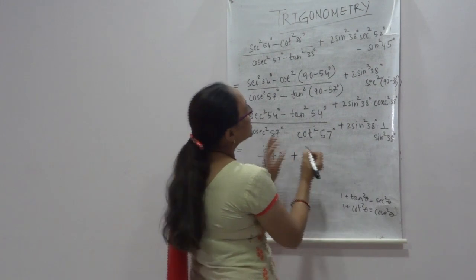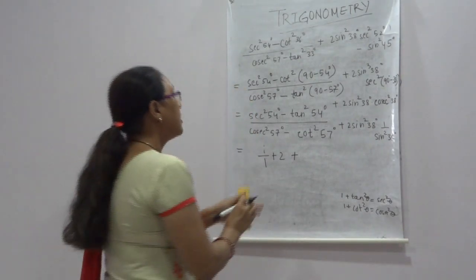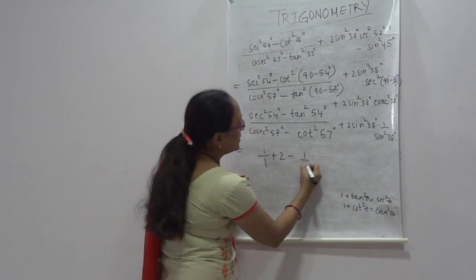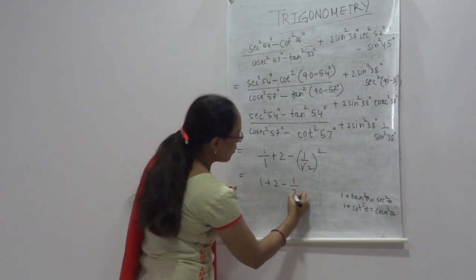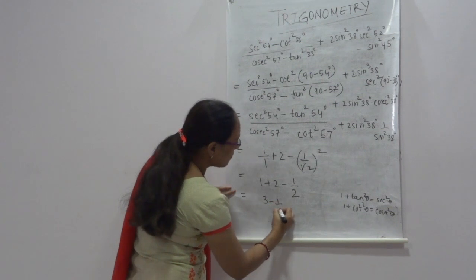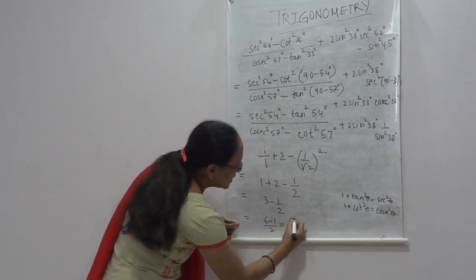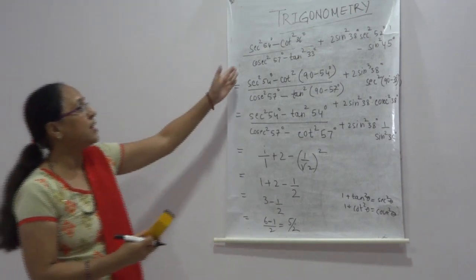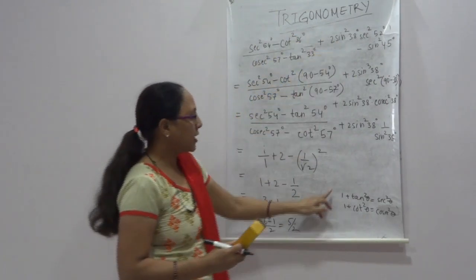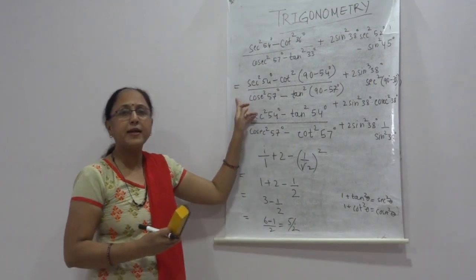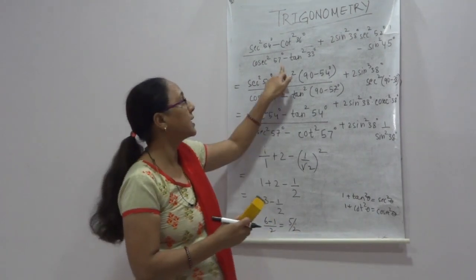Now the third term is −sin²45°. We know the value of sin²45° = (1/√2)² = 1/2. So the expression becomes 1 + 2 − 1/2, which is 3 − 1/2. Taking LCM: (6 − 1)/2 = 5/2. The question looked difficult but solving it step by step using identities made it easy.